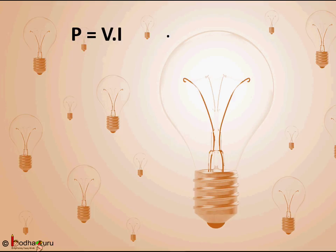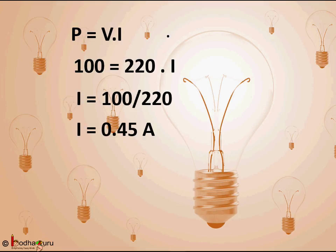So here V equal to standard 220 volts and power is equal to 100 watts. P equal to V into I, 100 equal to 220 into I. So I equal to 100 by 220 which is equal to 0.45 amp.